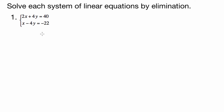We are going to solve each system of linear equations by elimination. Elimination, also sometimes called linear combination, means we add the two equations together in order to eliminate one of the variables. We're going to start with 2x plus 4y equals 40, and x minus 4y equals negative 22.